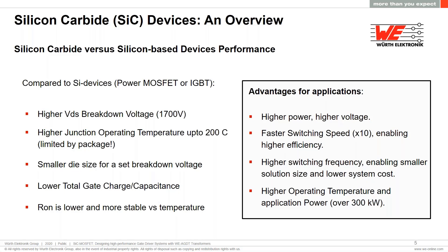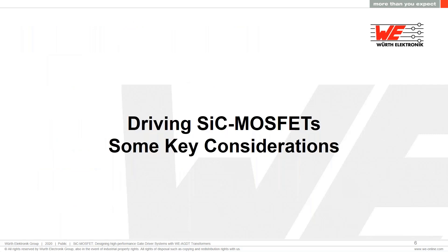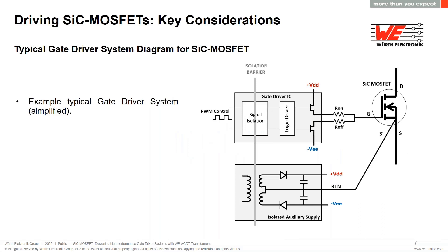Some of these applications can operate at above 300 kW of power. Now that we know the main advantages of SiC technology, let's go through some key considerations for driving silicon carbide MOSFET devices. Here we have a typical isolated gate driver system for silicon carbide MOSFETs with an integrated gate driver IC block and an auxiliary power supply block.